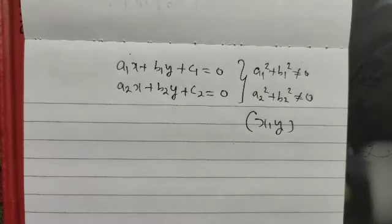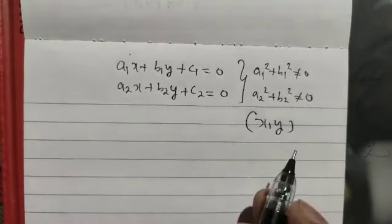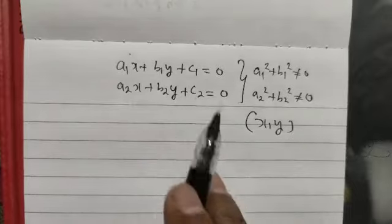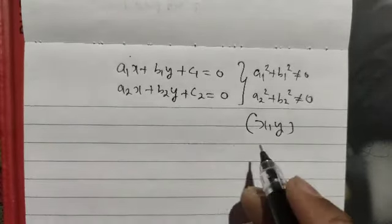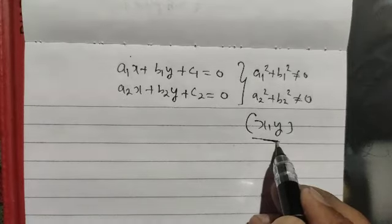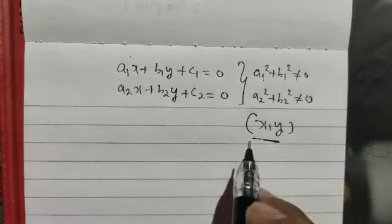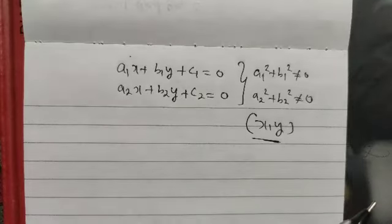Till now we have discussed about linear equations in two variables. Now our main focus is on the possible solutions of any given equation. Taking any ordered pair other than those already discussed, we can verify that one of the following possibilities is there.